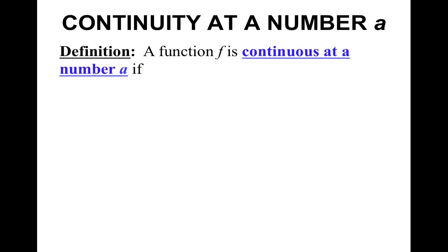We're going to start with the definition of continuity at a number a. A function f is continuous at a number a if the limit as x approaches a of f of x equals f of a.